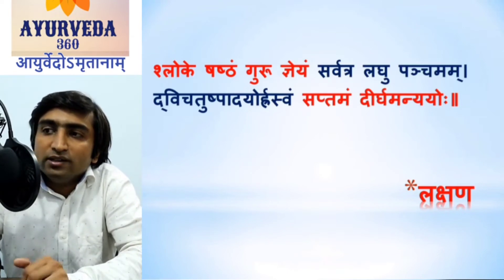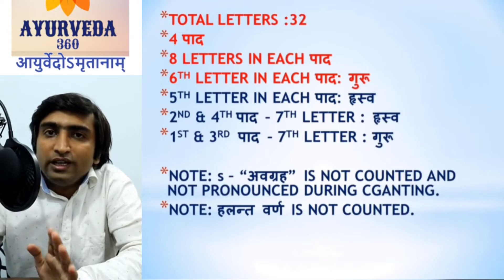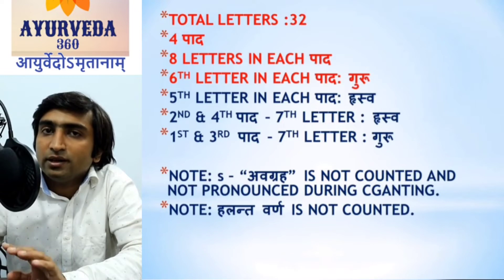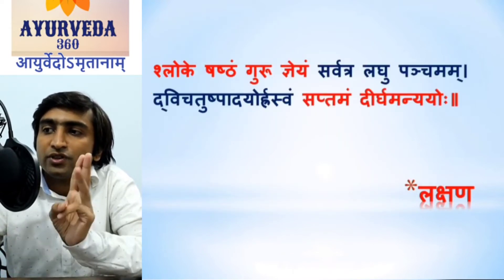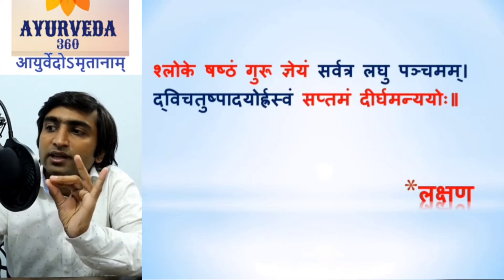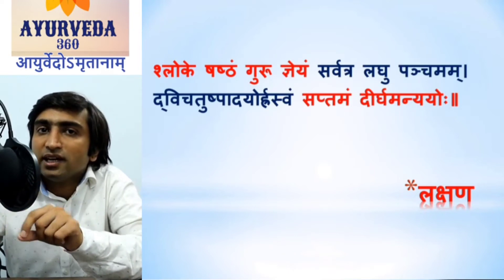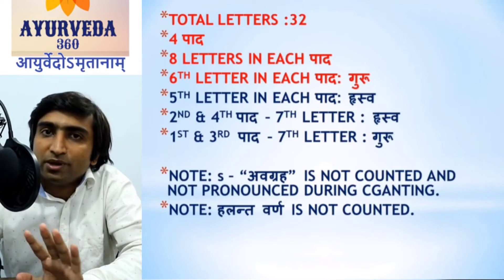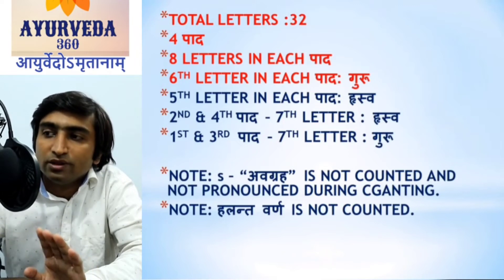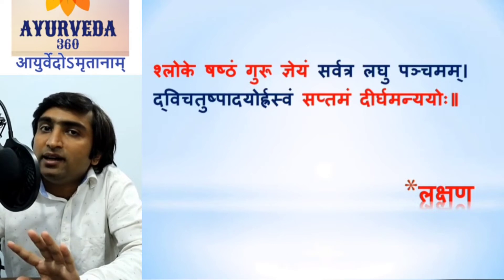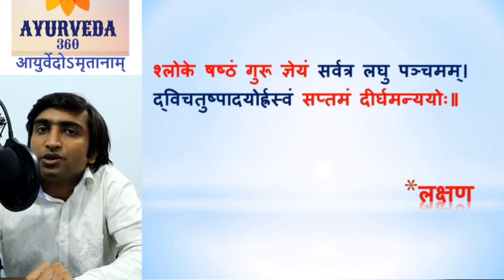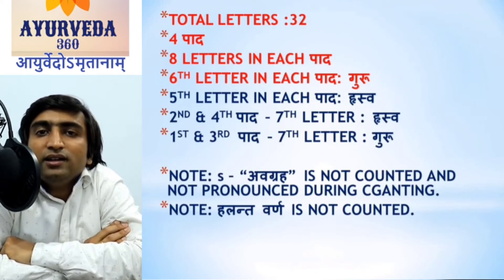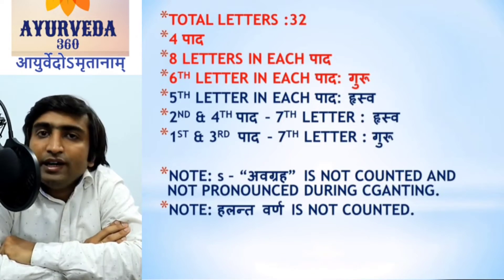Basically, this Shloka is made up of 4 different Pada — one fourth part of each Shloka is considered as one Pada. If you observe the number of letters, each line consists of 8 letters, so total it comes to about 32 letters. For example: Shloka-Shashtam-Guru-Gneyam is 8 letters. Sarvatra is 3, Lagu is 2, and Panchamam — the last Ma, which is Alanta, should not be counted. This is the rule of Chandas: Alanta letters will not be counted. So Sarvatra Lagu is also 8 in number. Dvi Chathushpaadhyur Rasvam is 8, and Saptamam-Deerga-Manye is 8 letters. So each Pada has 8 letters and the entire Shloka has 32 letters. That is the first rule to identify Anustub Chandas: it should have 32 letters as a whole, with 4 Pada of 8 letters each.